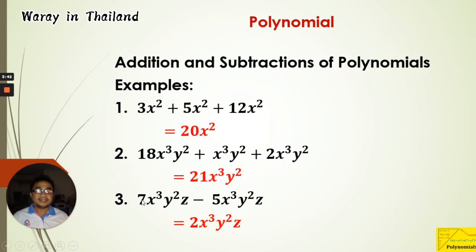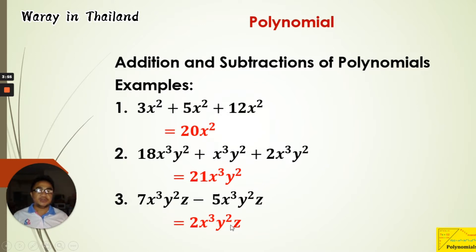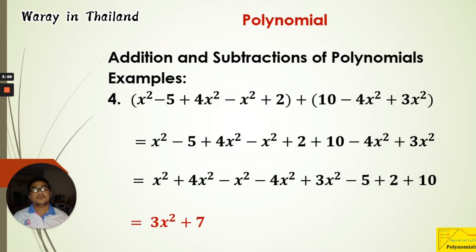Example 3 involves subtraction with x³y²z terms. Since the variables and powers match on both sides, we can subtract the coefficients: 7 minus 5 equals 2. So we copy the variable part x³y²z and the answer is 2x³y²z.